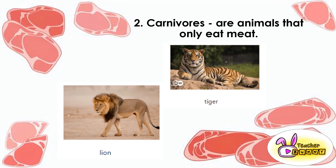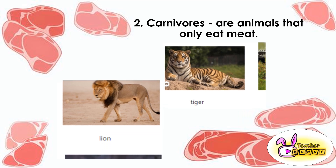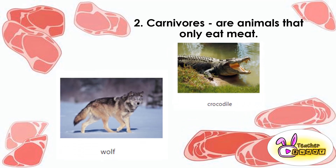Next are the carnivores. Carnivores are animals that only eat meat. Examples are lion and tiger — these animals eat meat only, they do not eat plants. Wolf and crocodile are also carnivores. They do not eat plants, but they only eat meat.